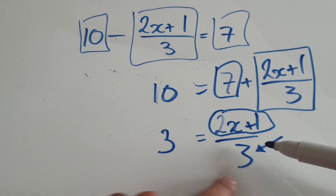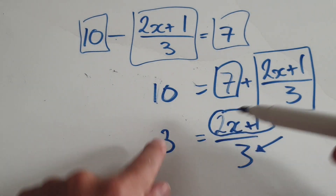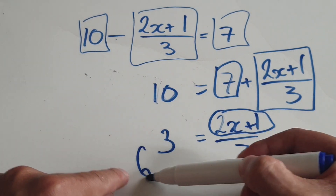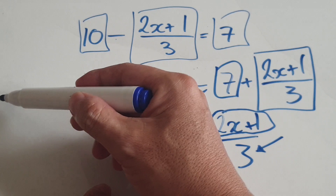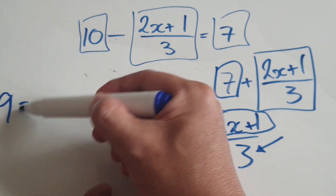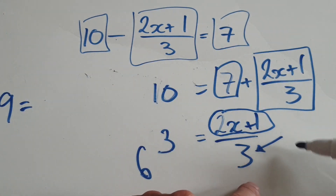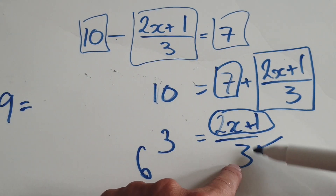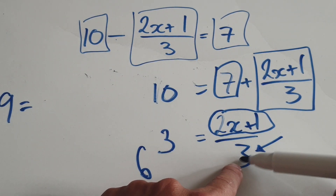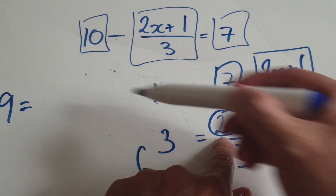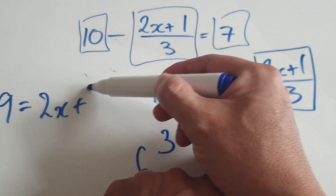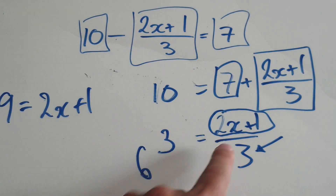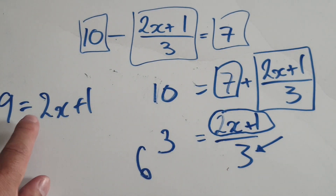Times this side by three, that would be nine. Then times this side by three — it would just kill off what's at the bottom, so all that's left is 2x plus one.